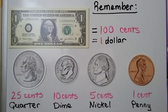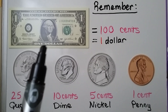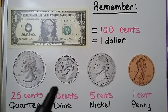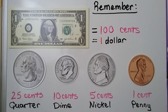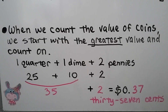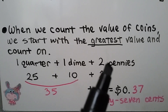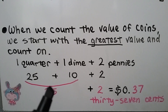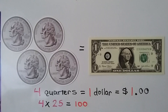A dollar bill is worth 100 cents — it's one dollar. A quarter is 25 cents, a dime is 10 cents, a nickel is five cents, and a penny is one cent. When we count the value of coins we start with the greatest value and count on. If we have one quarter, one dime, and two pennies, we start with the quarter: 25, then a dime makes 35, and two pennies makes 36, 37. We have 37 cents.